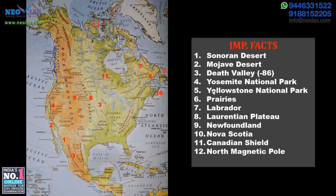Two very important national parks sometimes mentioned in news are Yosemite National Park and Yellowstone National Park. Yellowstone is famous for volcanic activity — not full eruptions, but hot springs and geysers. Hot springs have mineral-rich water, while geysers erupt upward. The world's largest concentration of geysers is located in Yellowstone National Park in the US.